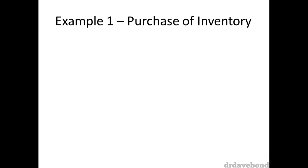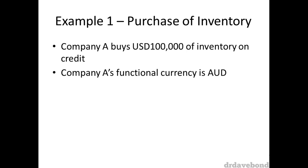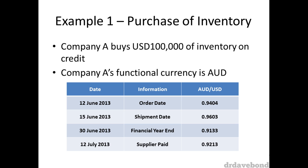This leads us to our first example to demonstrate how this works. Company A purchases USD 100,000 worth of inventory. Company A's functional currency is AUD. The order occurred on the 12th of June, the shipment and title passed on the 15th of June, their financial year ends on the 30th of June, and Company A finally pays its supplier on the 12th of July.